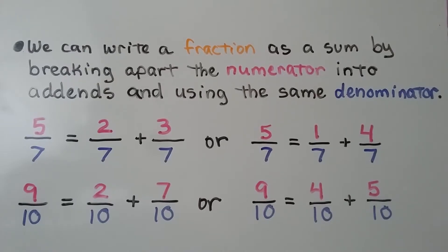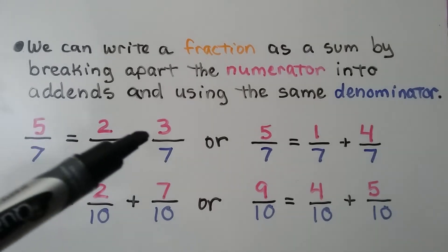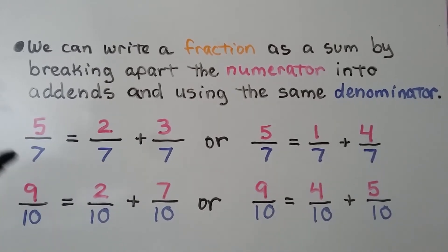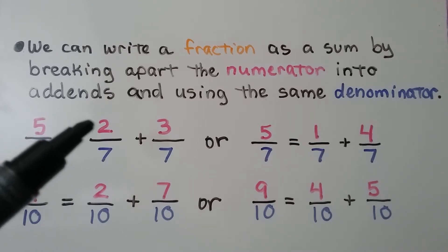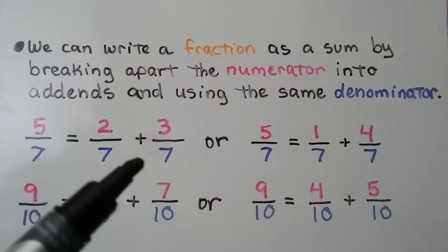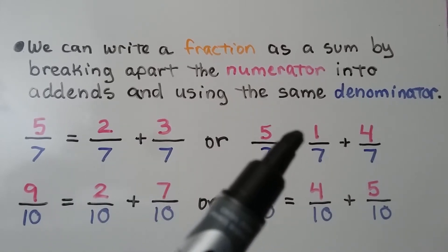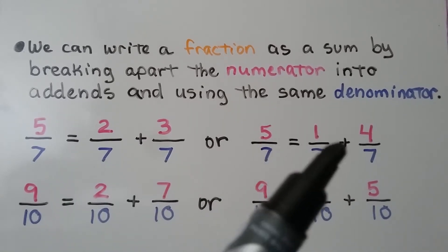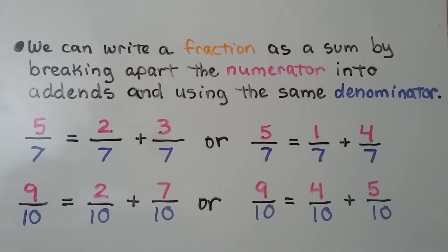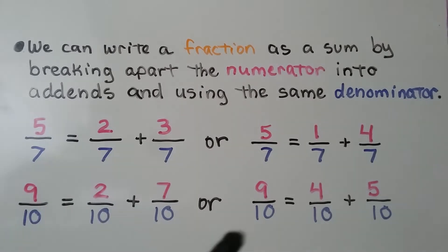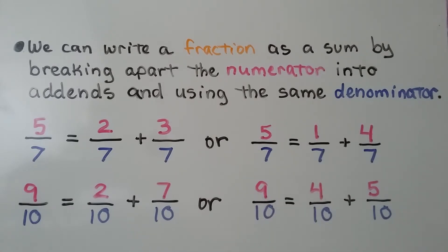We can write a fraction as a sum by breaking apart the numerator into addends and using the same denominator. For 5 sevenths, we can break apart the 5 into a 2 and a 3 to have 2 sevenths plus 3 sevenths. We could also break it into a 1 and a 4 for 1 seventh plus 4 sevenths. For 9 tenths, we can break apart the 9 as a 2 and a 7 for 2 tenths plus 7 tenths, or as a 4 and a 5 for 4 tenths plus 5 tenths.